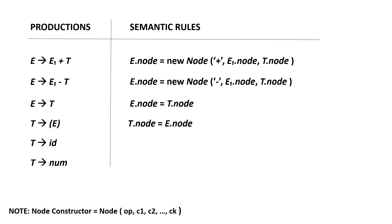While in the fifth production, we will be using the leaf constructor which is equals to leaf open parenthesis operator then value closing parenthesis. t derives id will become t dot node is equals to new leaf open parenthesis id comma id dot entry closing parenthesis. t derives num will be t dot node is equals to new leaf open parenthesis num then num dot value closing parenthesis.